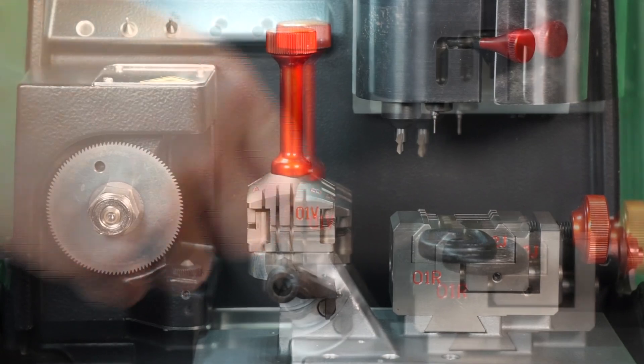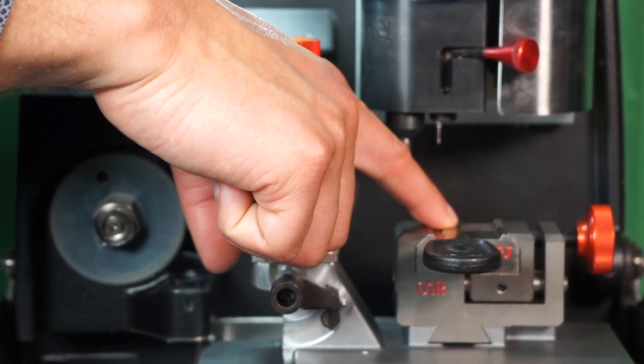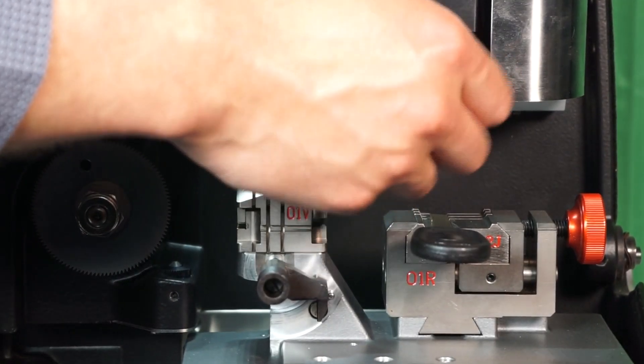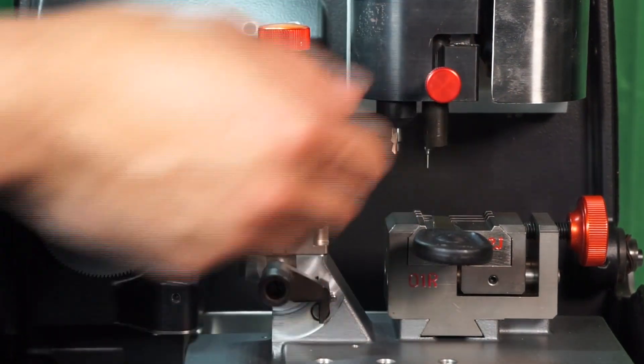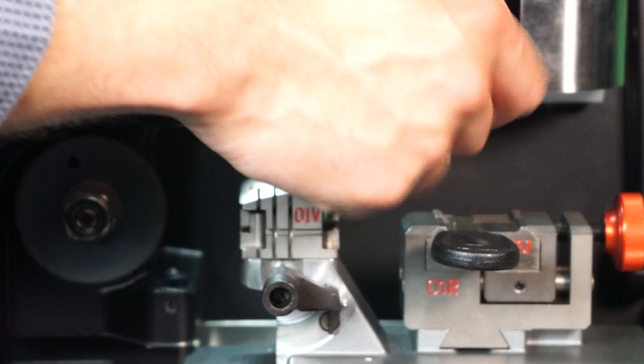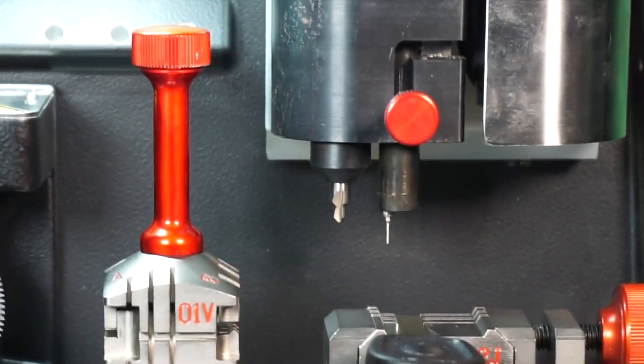You have three stop positions here: stop 1, stop 2, and stop 3. Lastly, we have what's called a mobile tracer, which is this knob up top here. If you lower this mobile tracer, this is what allows you to decode high-security keys or dimple keys.